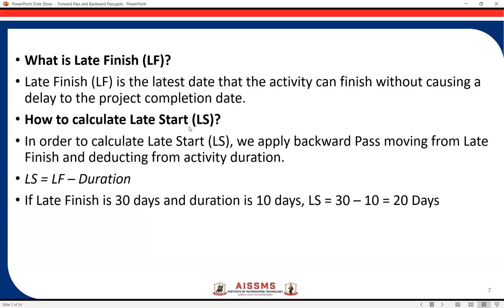How do we calculate the late start? In order to calculate the late start, we apply the backward pass technique, moving from the late finish — from the right side to the left side. In the backward pass we move right to left, whereas in the forward pass we move left to right. We take the last activity first. The early finish of that last activity is taken as the late finish time, and then we calculate the late start using the formula: Late Start = Late Finish − Duration. For example, if the late finish is 30 days and the duration is 10 days, then LS = 30 − 10 = 20 days.